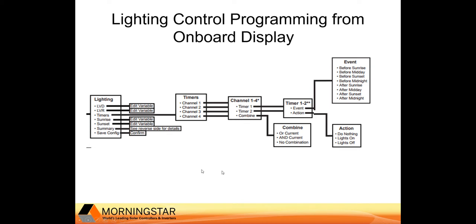Let's take a closer look at the lighting variables available for programming. LVD and LVDR are the settings for the battery voltage value you would want to set to turn the load off, or turn the load back on again when the battery begins to recharge. Timers are used for setting when to turn the lights on and off and for how long. Sunrise is the setting for what percentage of array voltage triggers the sunrise flag. Sunrise and sunset typically do not need to be adjusted unless there is an issue with ambient lighting or very low solar resource. The summary gives a basic visual of how the lighting is set, and save config is critical and is used to save the programming you have set up.